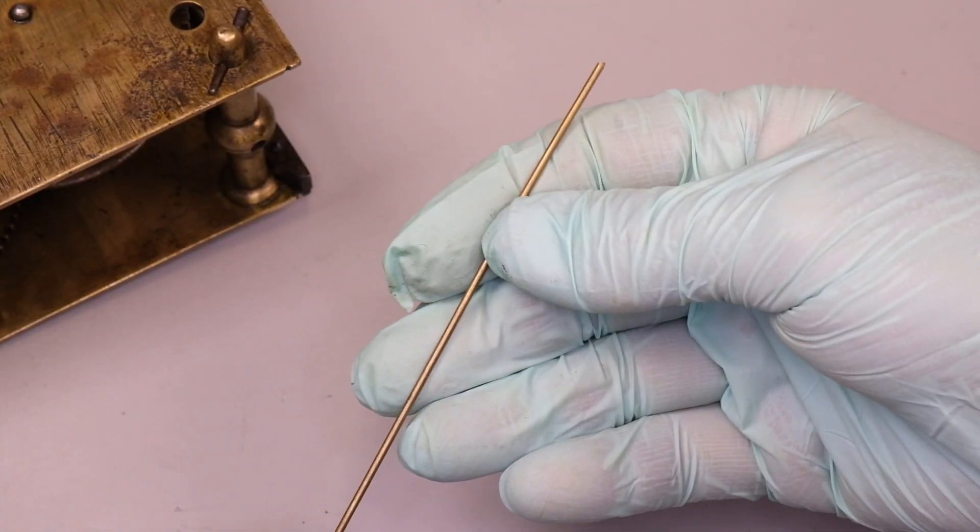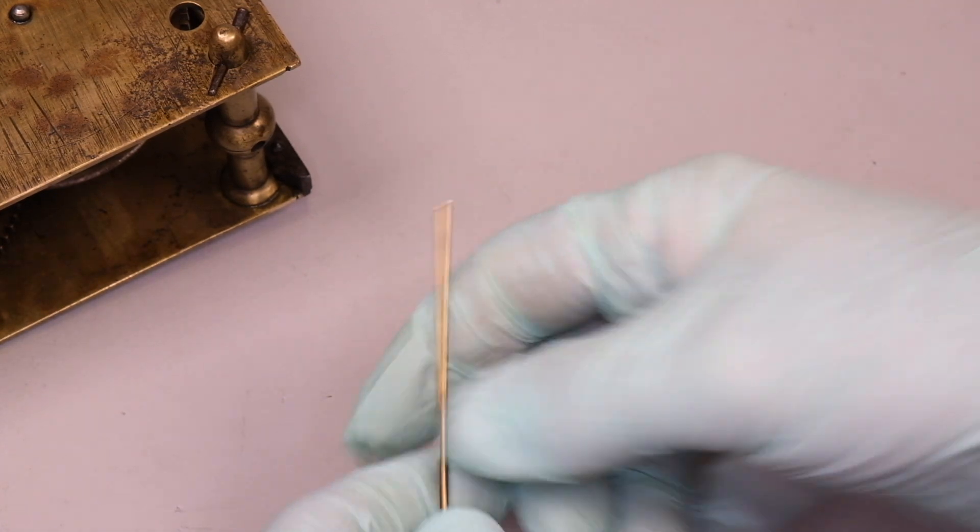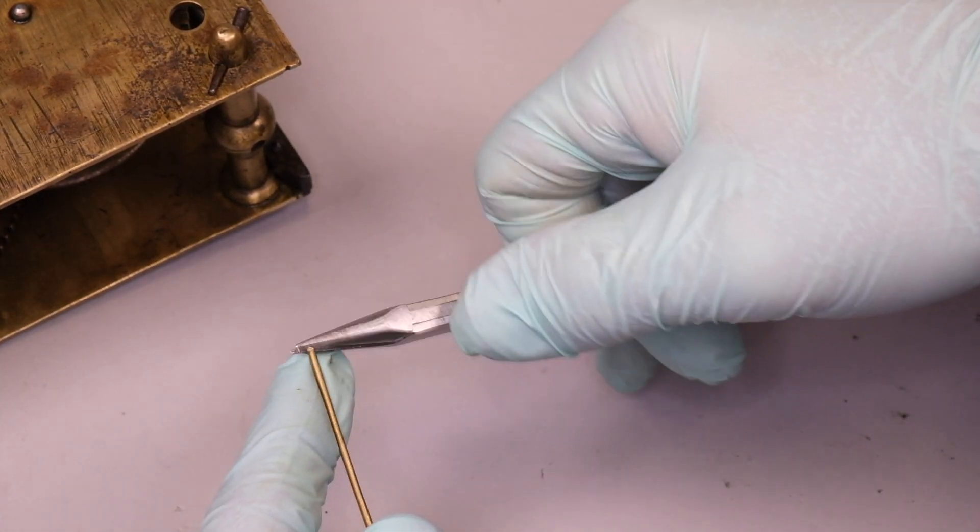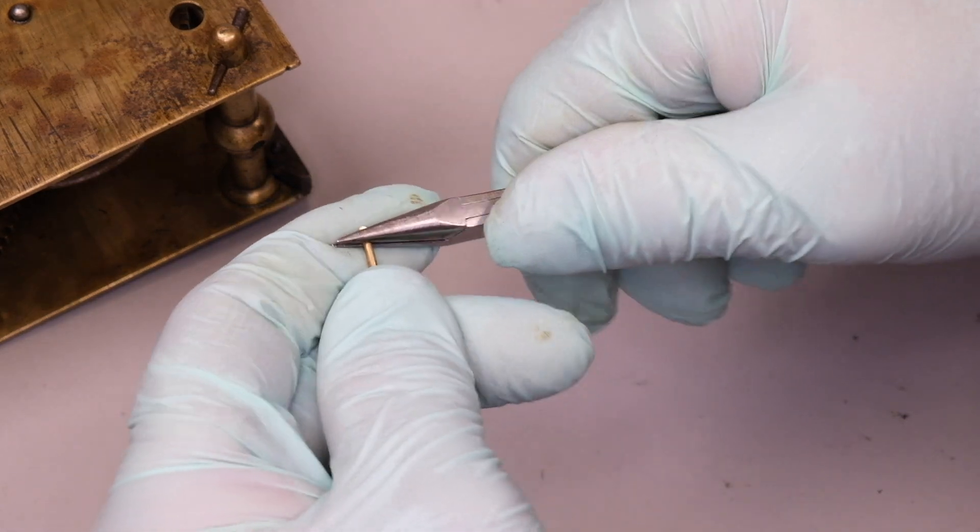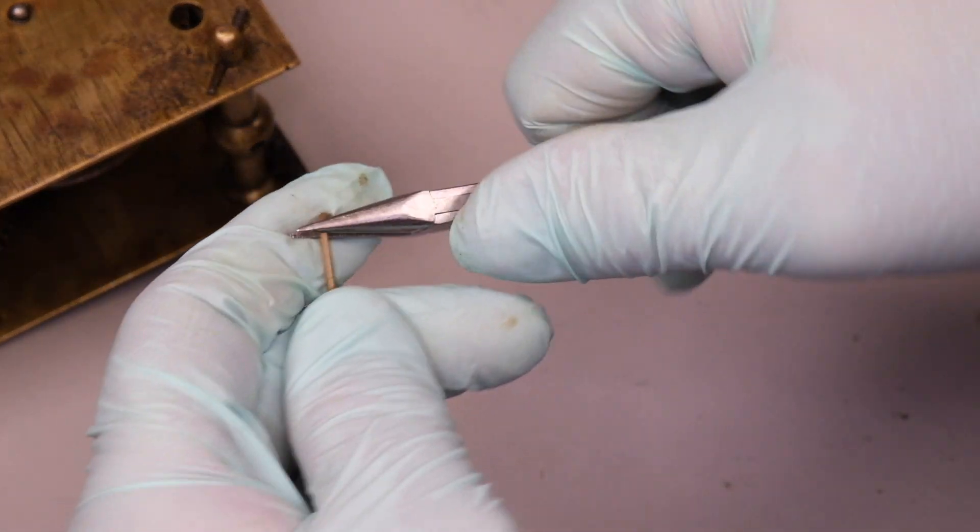Then I'm going to take a piece of brass wire to make a prototype and quickly make a loop on the end which is going to fit on that square that protrudes through the plate.